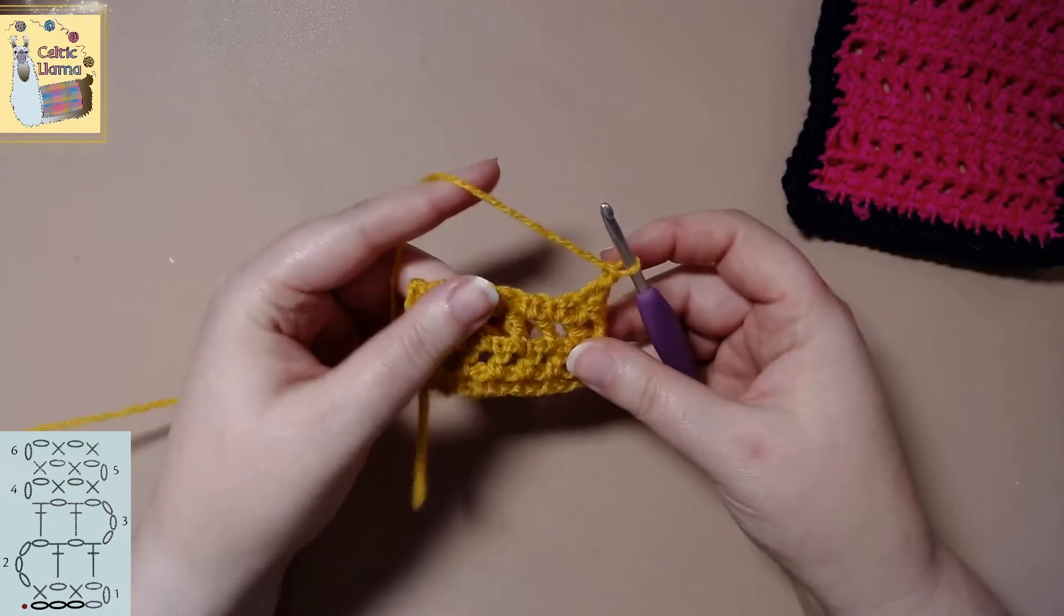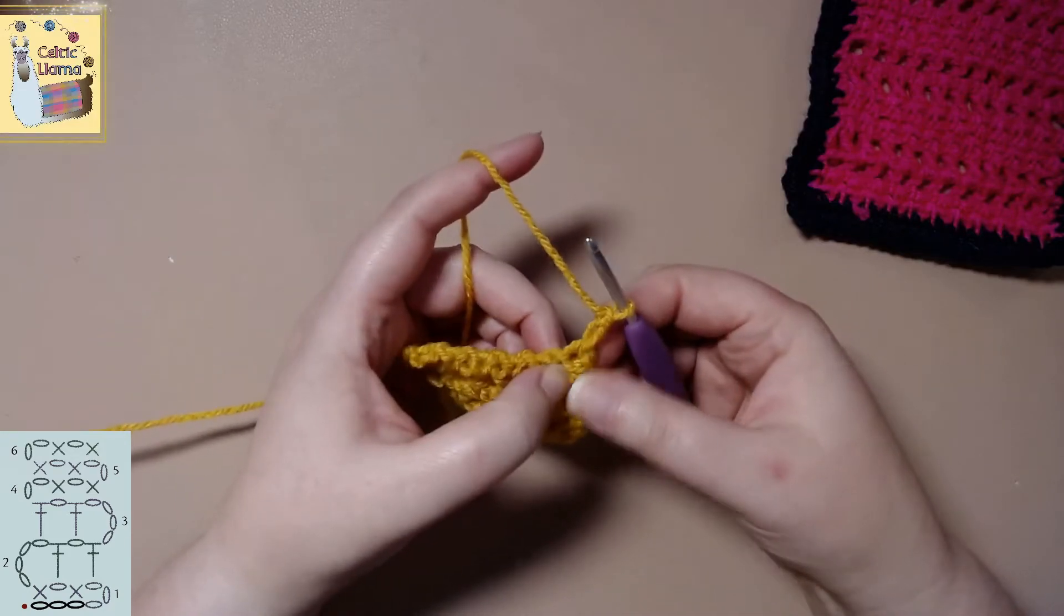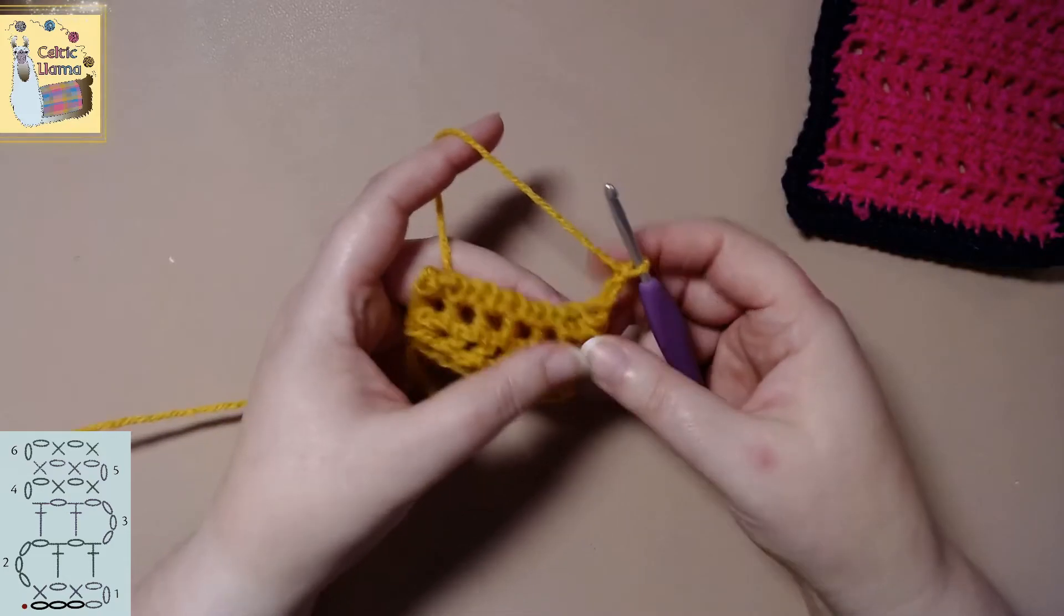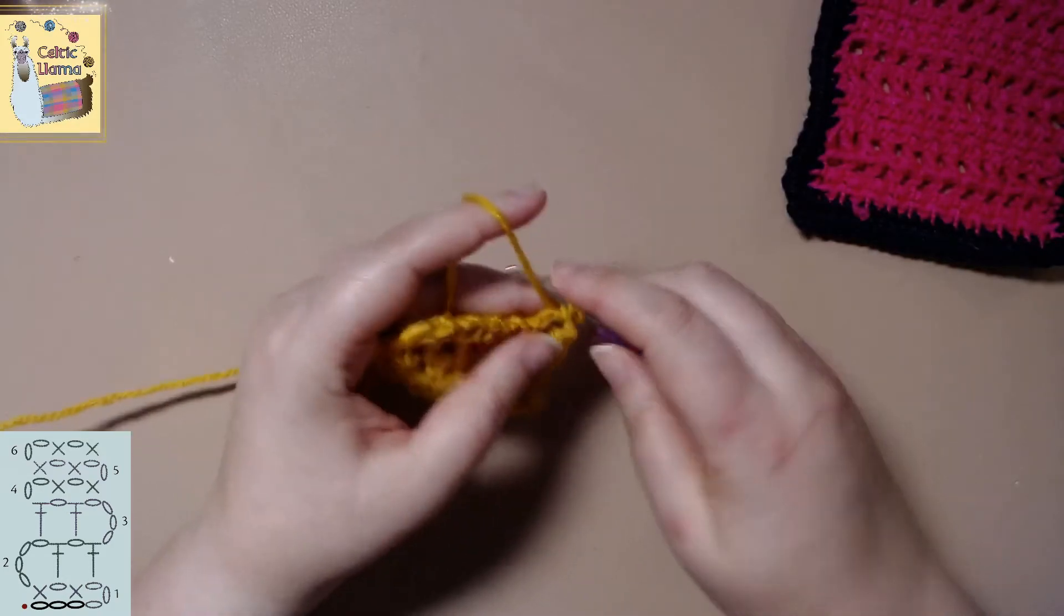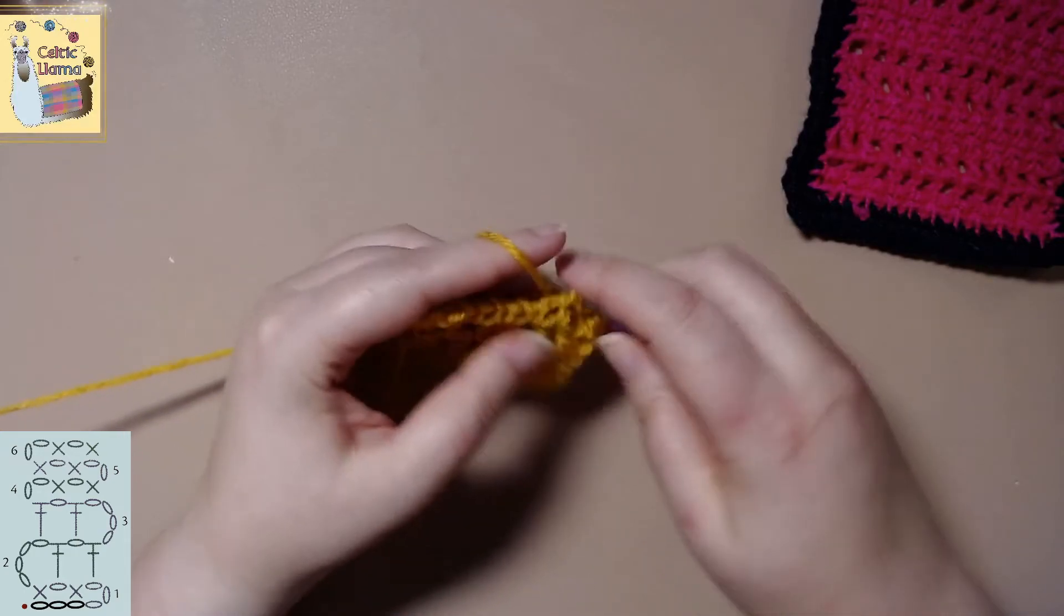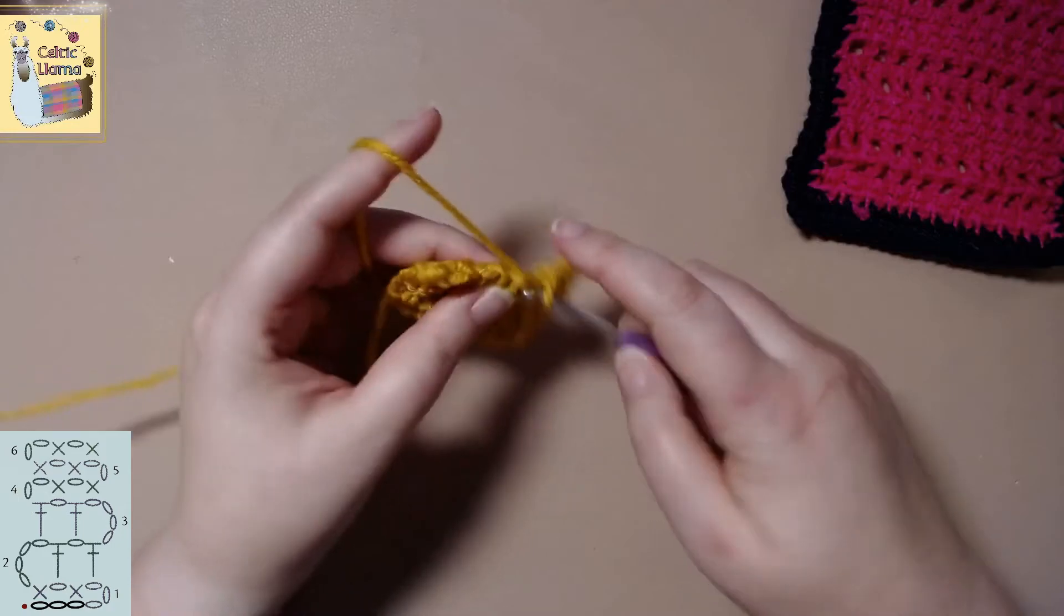So chain two. And single crochet in the chain one space. Now we'll do this all the way to the end of the row.